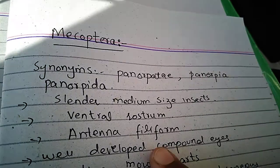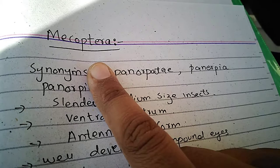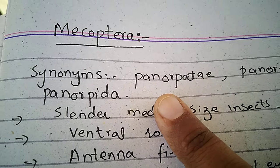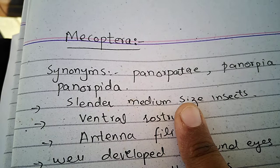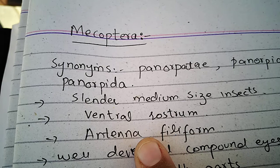Assalamu alaikum class. Today our topic of discussion is the general characteristics of the order Mecoptera, synonyms Panorpata, Panorpea, and Panorpeida. These insects are cylindrical and medium-sized. A ventral rostrum is present in their body, and the antennae are filiform.